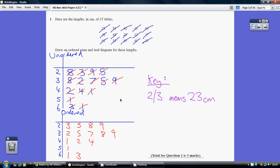That's your unordered. Then your final answer is ordered underneath. For ordered, you just put these in numerical order: 3, 5, 8, 9, then 2, 5, 7, 8, 9, etc. Again, put a line through each as you go.